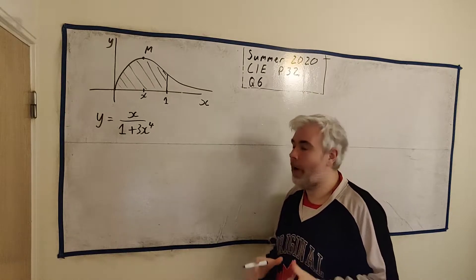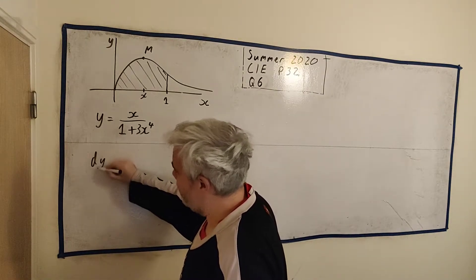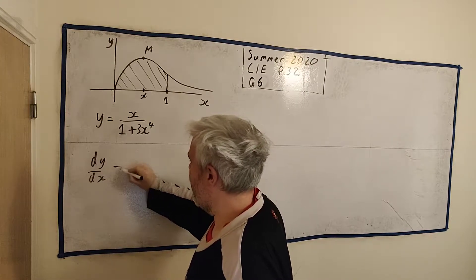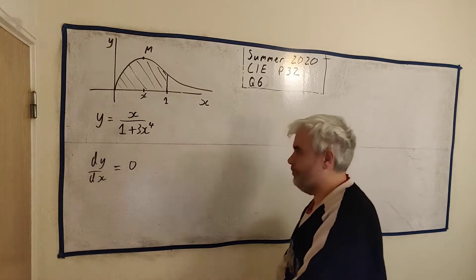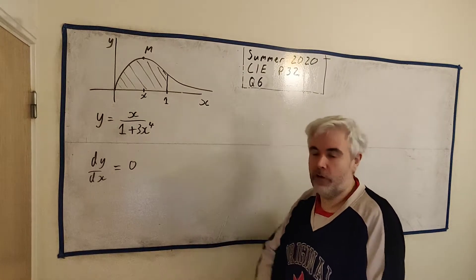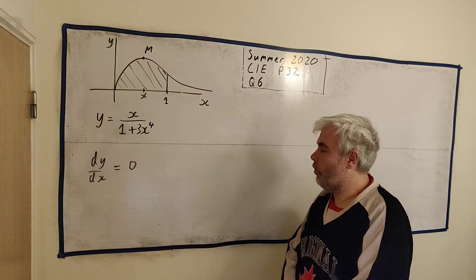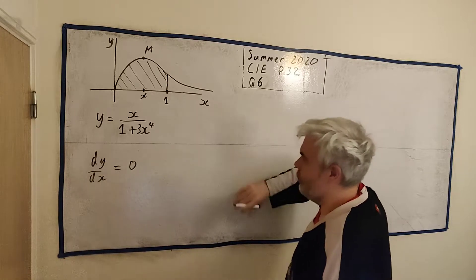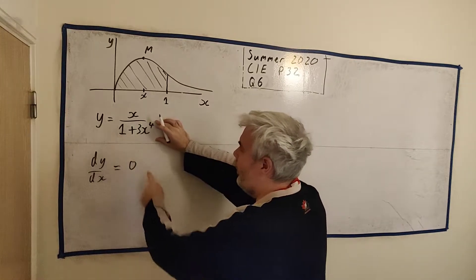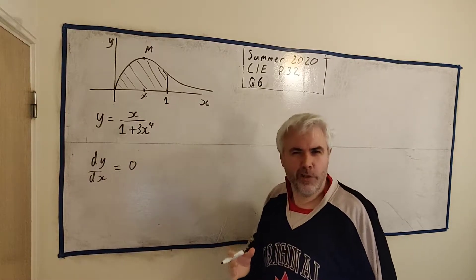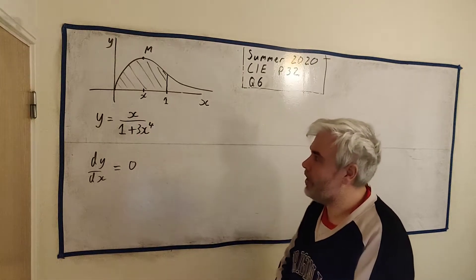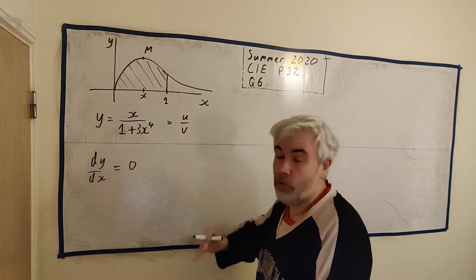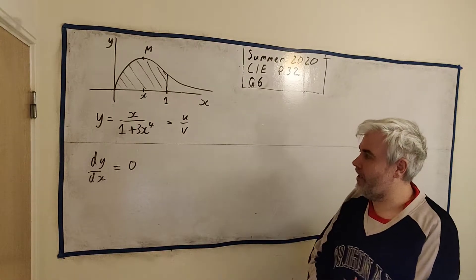So we see maximum, what should we be thinking? dy/dx equals 0. Now, how do we differentiate a function like this? We can use the product rule or the quotient rule. We use the product rule by taking the bottom row and putting it to the power of minus 1 and multiplying by it. That's actually how I usually do it. But for the most part, I usually show students how to use the quotient rule.